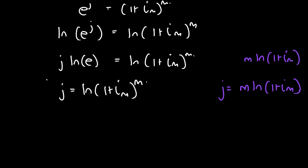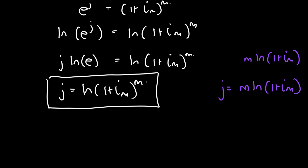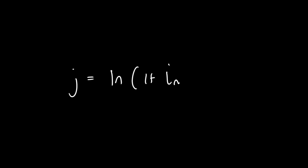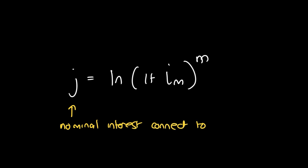That is our equivalent effective interest rate for continuous compounding in terms of an effective interest rate with a compounding period such as monthly, daily, quarterly, or semi-annually. So J = ln((1 + iM)^M) gives the equivalent normal interest rate for continuous compounding, where iM is the effective interest rate related to the compounding periods.